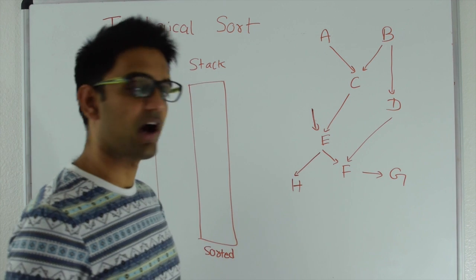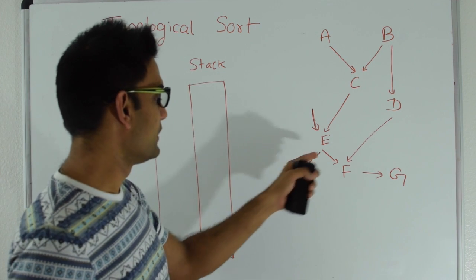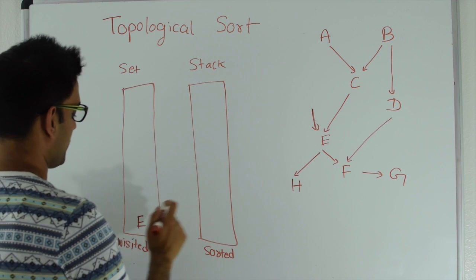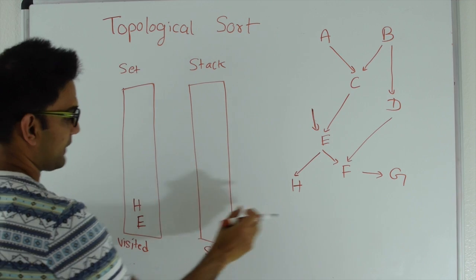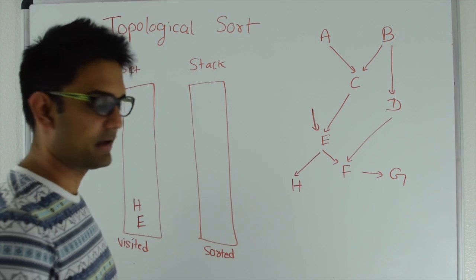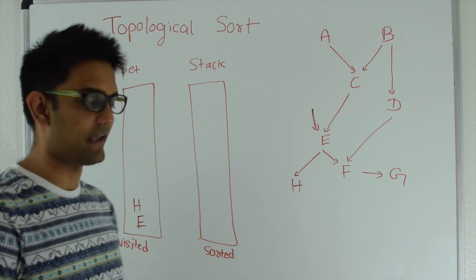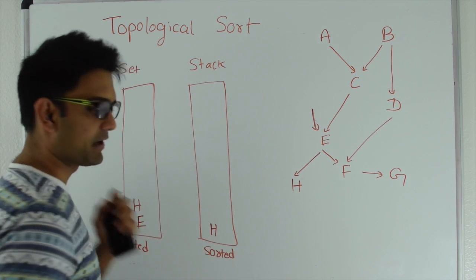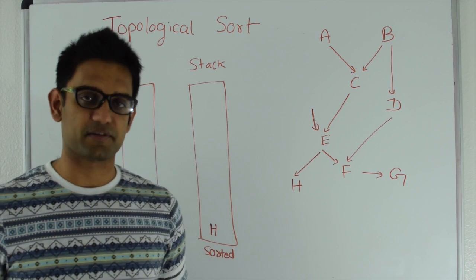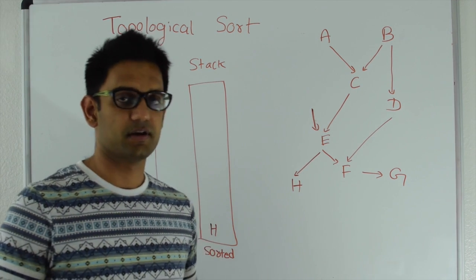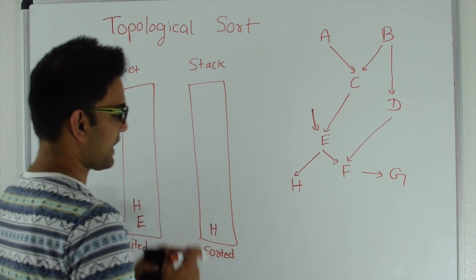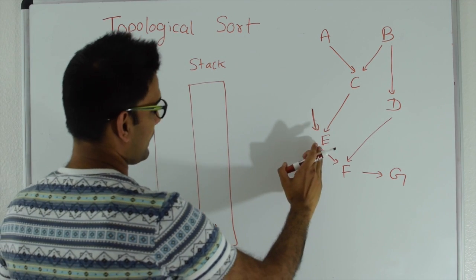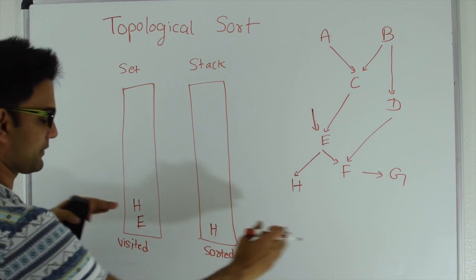Then we explore the children of e. We go in the direction of h. H is not visited, so we put h into the visited set and then explore the children of h. H has no children, which means h has been totally explored. At that point we put h into the stack — a vertex is only pushed to the stack once all its children have been explored.